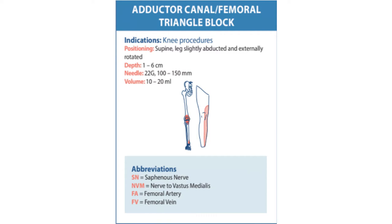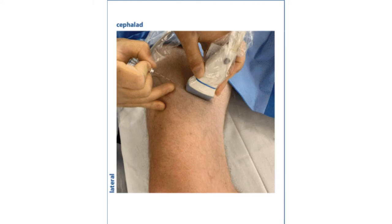Adductor canal block, used for knee procedures. Position the patient supine with the legs slightly abducted and externally rotated. Use a 22 gauge needle and expect to use a volume of 10 to 20 mls of local anaesthetic.